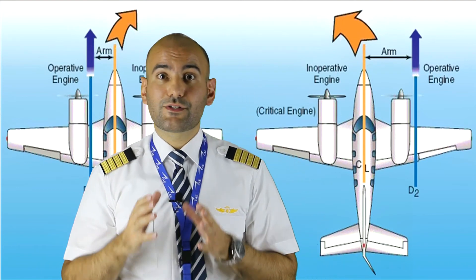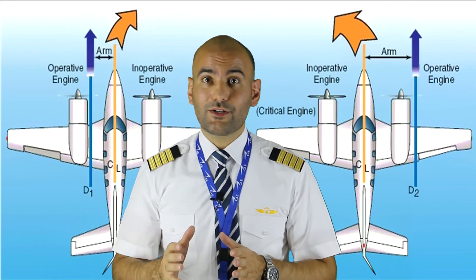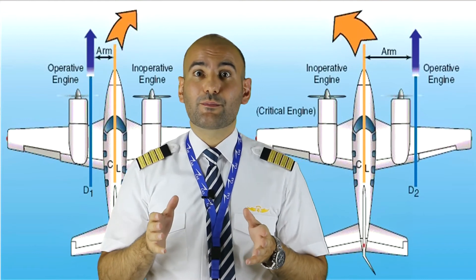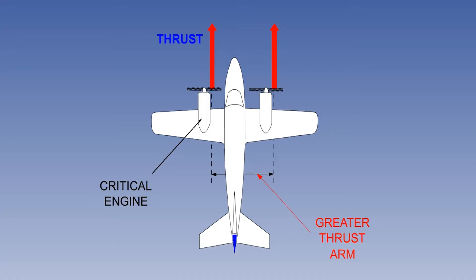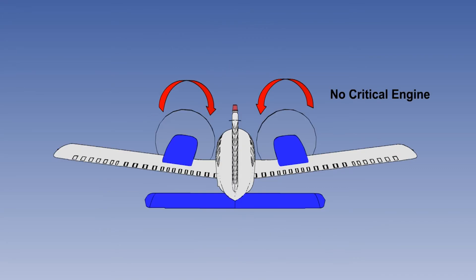There are also some aircraft where the propellers rotate toward the cockpit — meaning the right side rotates counter-clockwise and the left side rotates clockwise. In this case, we don't have any critical engine on these types of aircraft.